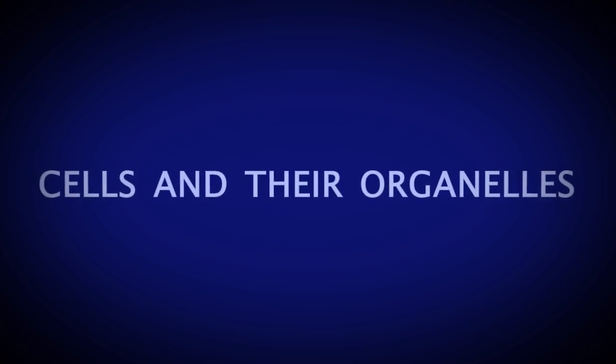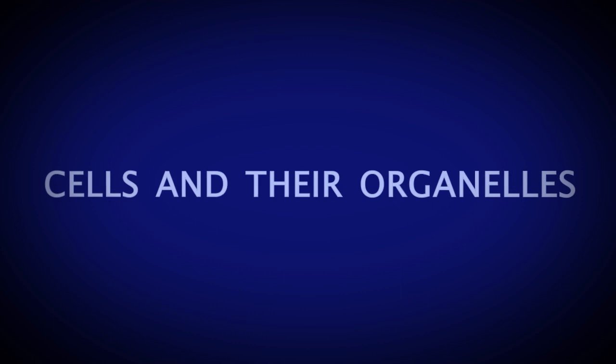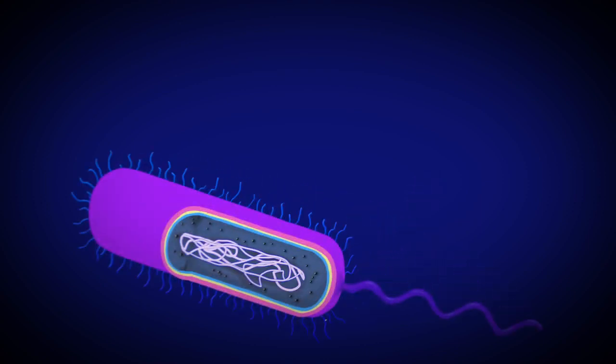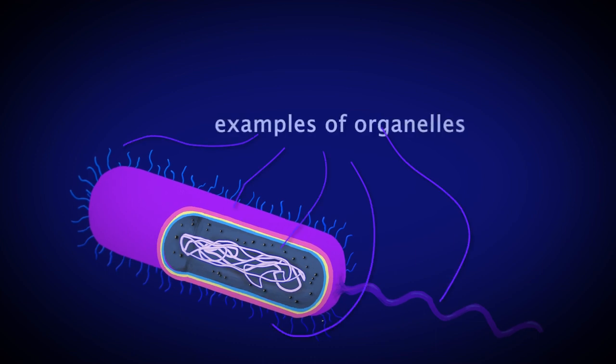All living things are composed of cells. There are two distinct types of cells: the prokaryotic cell and the eukaryotic cell. Prokaryotes are the smallest unit of life. They are single-celled organisms that store DNA in a nucleoid region and have few organelles.